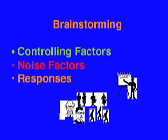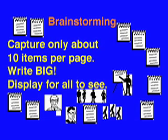The last category of factor is the response — the thing that changes as a result of your manipulations. Usually there is more than one response and you need to consider all of them. I have seen experiments that only included the primary response, which was optimized, but to the detriment of other responses. Often we need to find a trade-off between multiple responses. Capture only 10 items per page and write big. Display the pages for all to see, as this acts as a catalyst for new ideas.